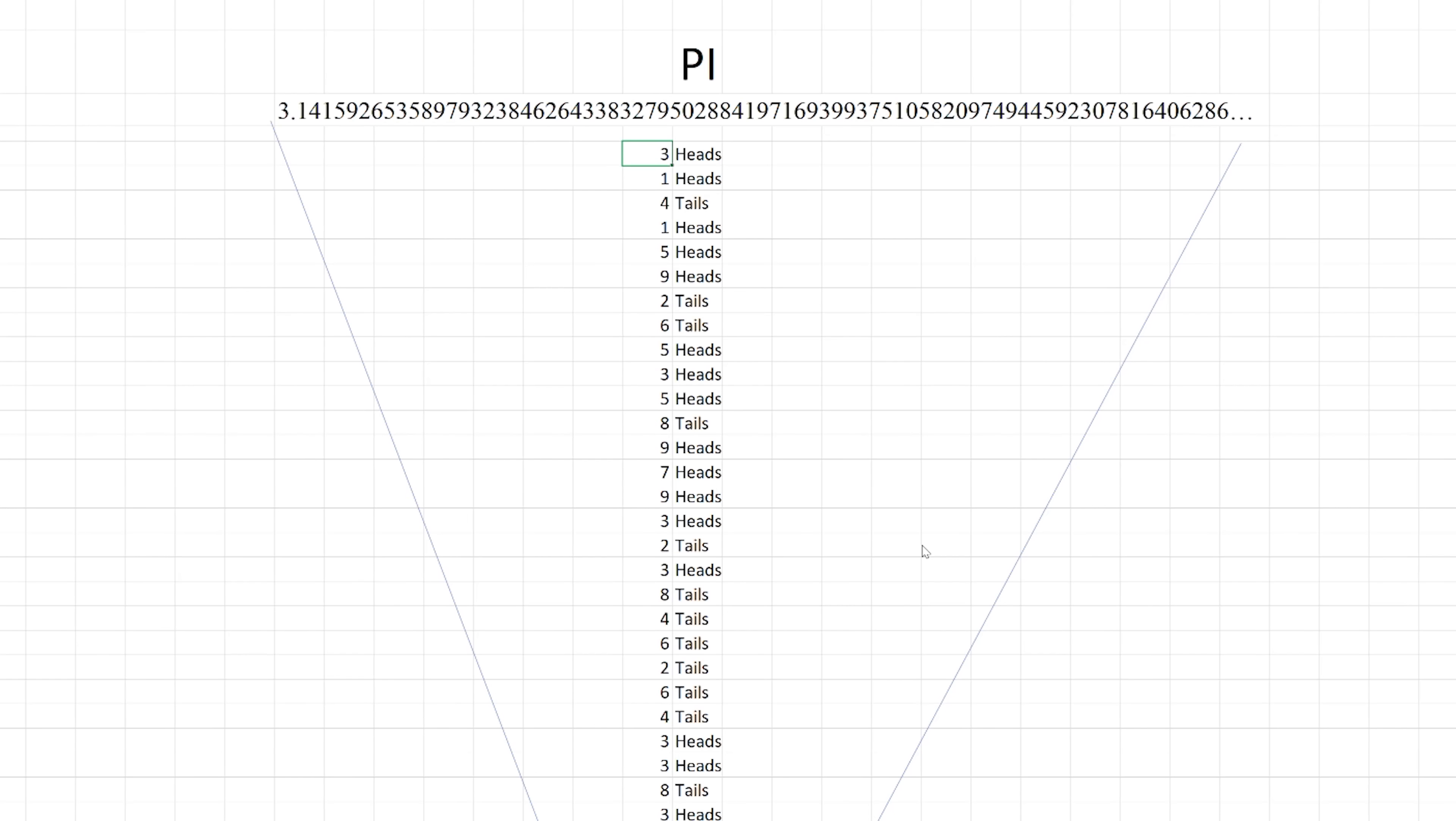But if you did know those initial starting numbers, then you could predict perfectly every time what the random number generator would output. For example, I can make a simple pseudo-random coin flipping algorithm by using the digits of pi. If the digit is odd, it's heads. If it's even, it's tails. So I just write out the digits of pi and every time someone asks me to flip a coin, I just look at the next digit of pi in the column and tell them the result based on whether it's odd or even.